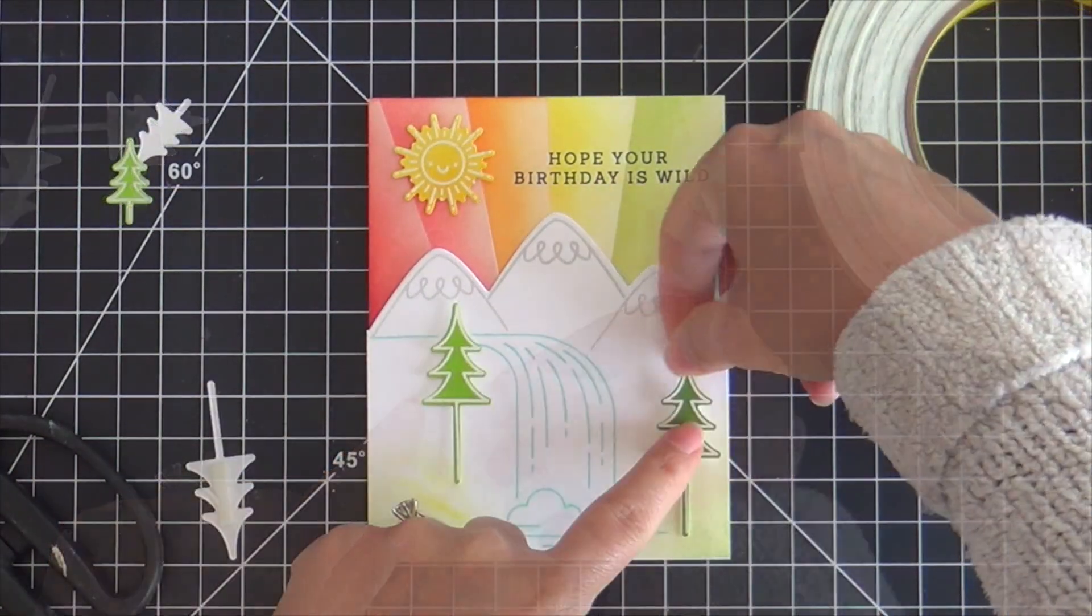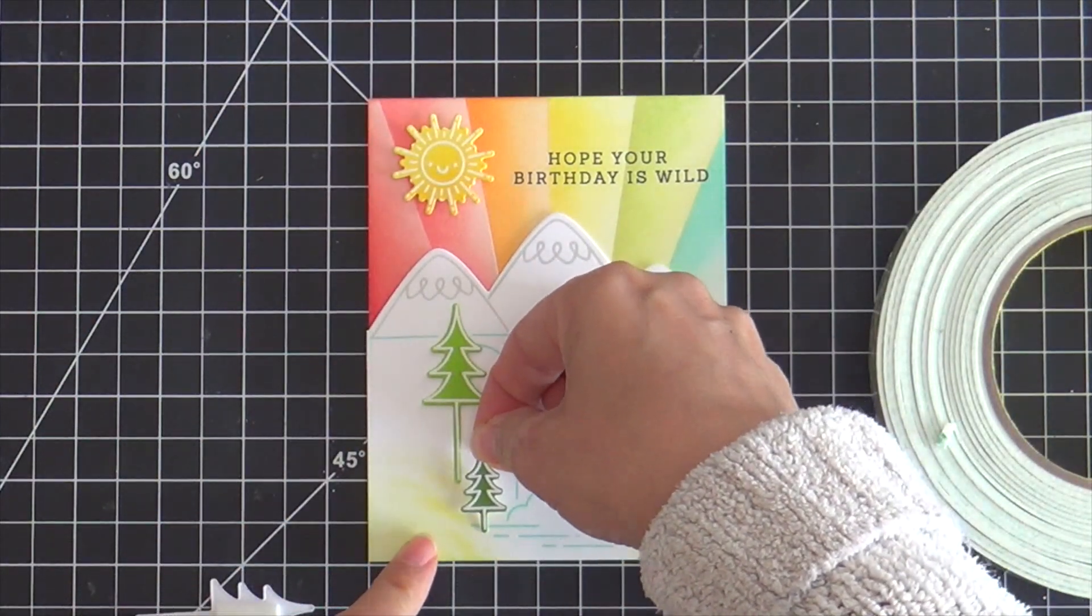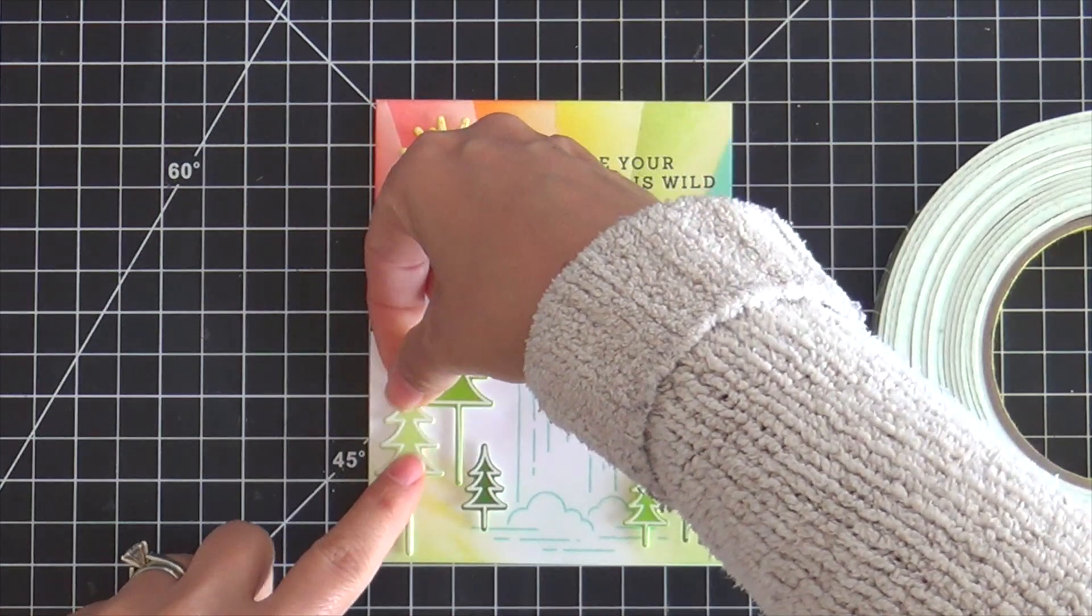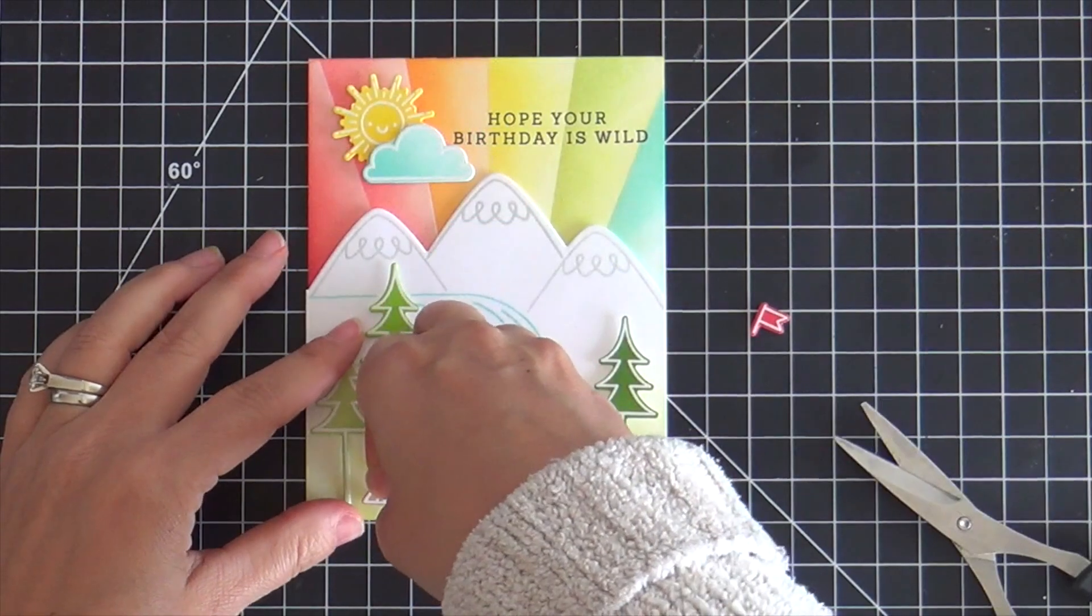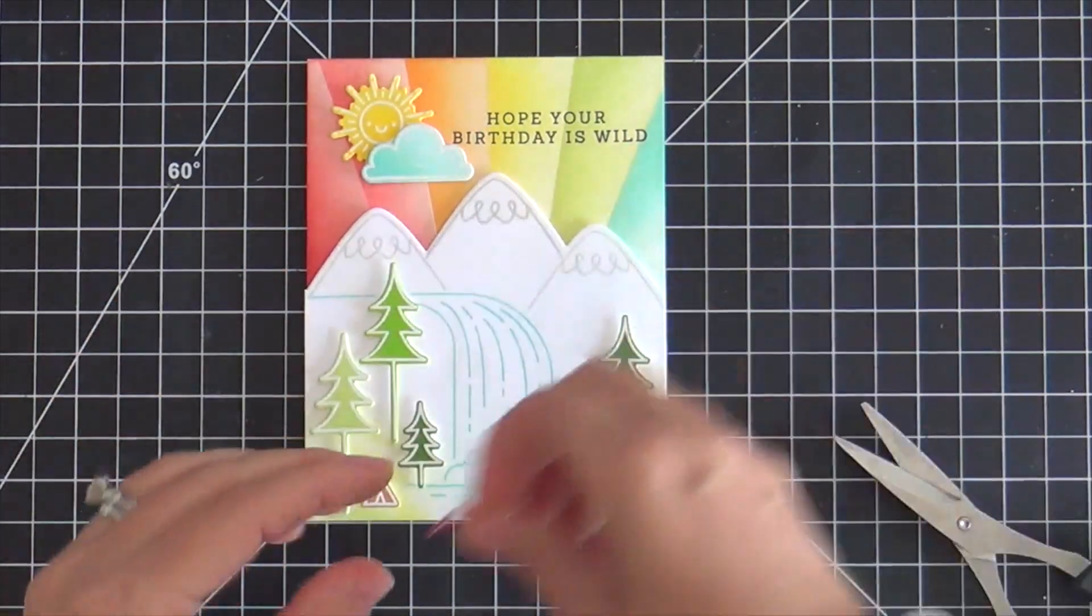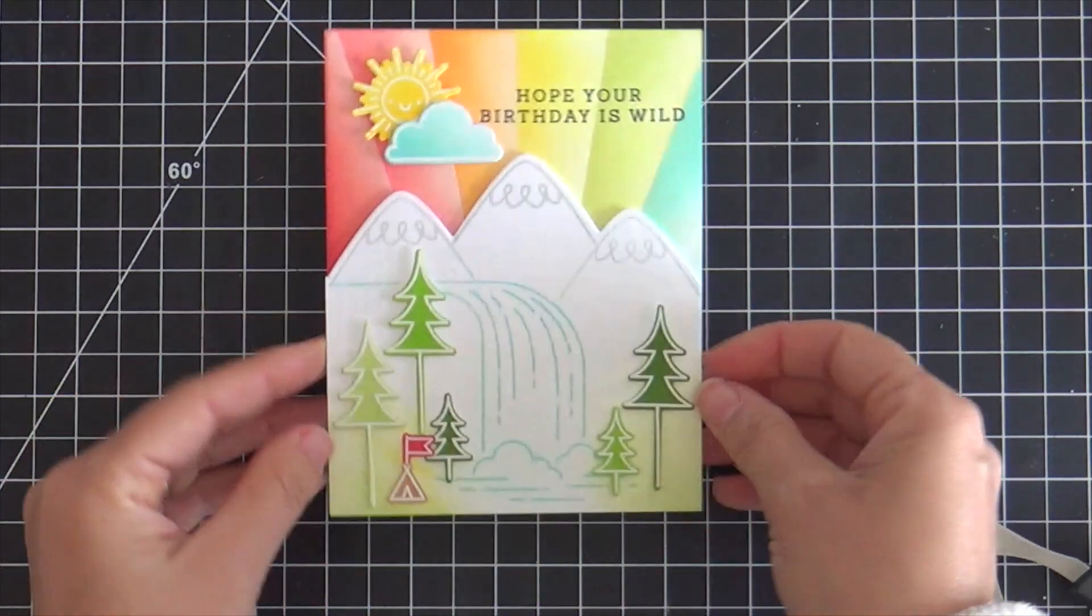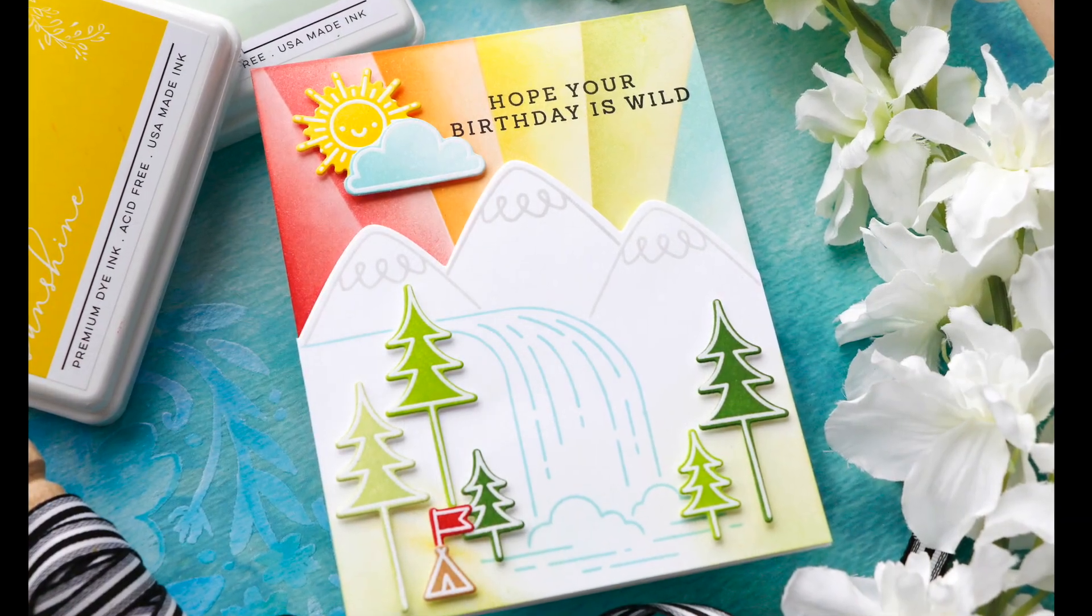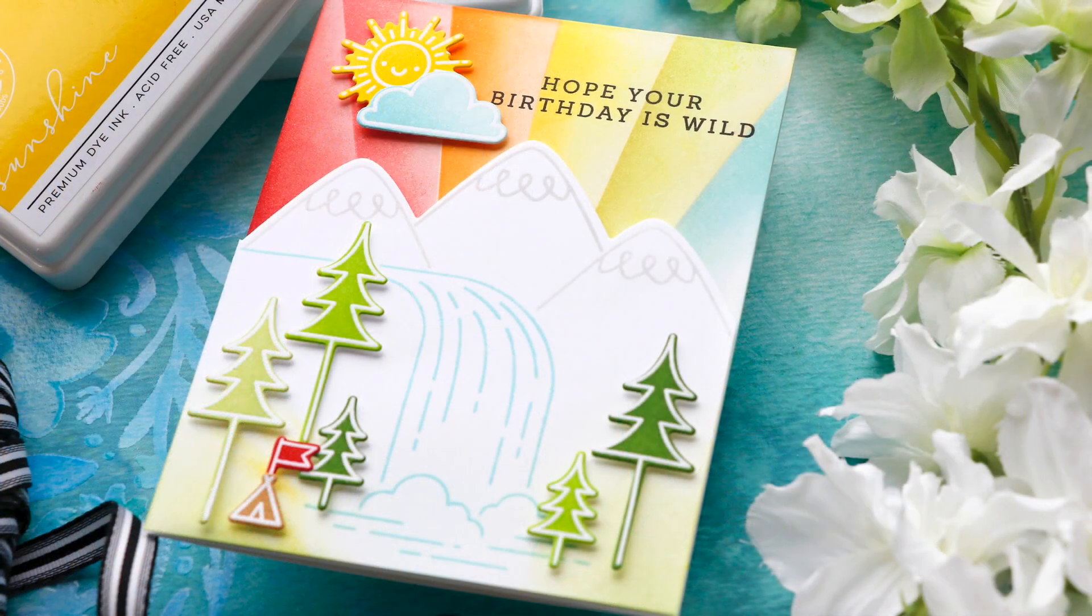I'm assembling the card. Everything's getting popped up. The sun, the mountains. These are evergreens, right? I'm creating a composition here, a place where I can nestle that little tent right down in there. I wasn't sure what to do with the flag, but I love the red flag. So I stuck it right on top of the tent. You do you is what I say. If you want a red flag on top of your tent, you fly that flag with pride. And this card is finished.